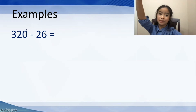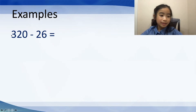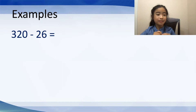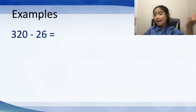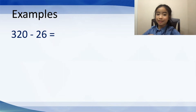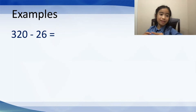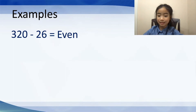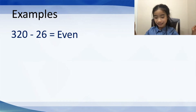Now let's look at the next one, which is 320 minus 26. This time, let's use odd and even. 320 is an even number — a humongous even number — and 26 is also an even number. So an even number was looking at the mirror and inside the mirror it saw an even number. So the result is even.